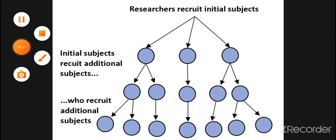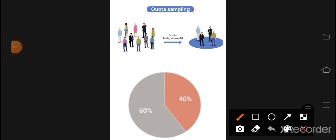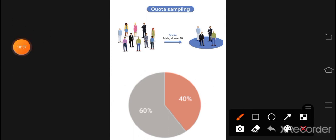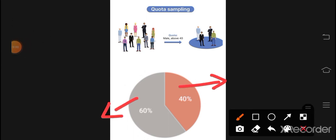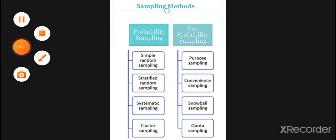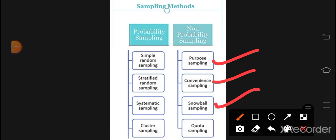Next is quota sampling. We put a predetermined figure — for example, males above 40 years. The whole population has different ages, but we say we will only take males above 40 in our sample. Another example: if there are 60% females and 40% males, we set quotas proportionally. This is quota sampling, and it is not considered a good sampling technique.